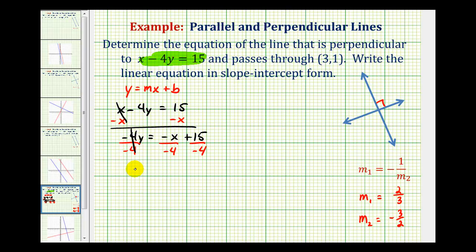So we'll have y equals, now to simplify this, we could write negative x as negative 1x. And negative 1 divided by negative 4 would be positive 1/4. So we'll have 1/4 x minus 15/4. So notice the slope of this line, we'll call it slope 1, is going to be equal to positive 1/4.